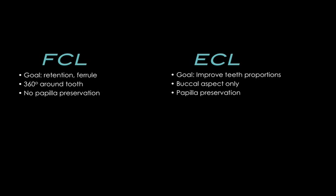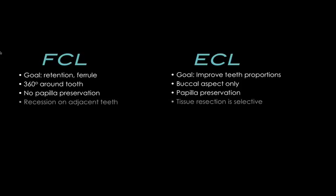So there is absolutely no papilla preservation in functional crown lengthening. With aesthetic crown lengthening, the papilla preservation is critical — we can't lose the interproximal tissue because we'll have an aesthetic compromise. That's another key difference between the two procedures.